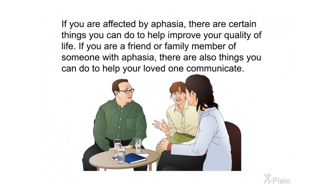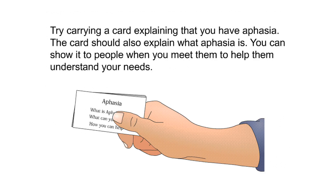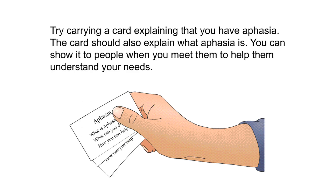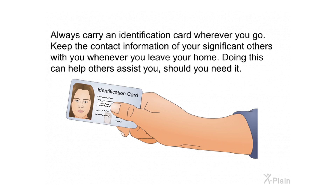If you are a friend or family member of someone with aphasia, there are also things you can do to help your loved one communicate. Try carrying a card explaining that you have aphasia and what aphasia is — you can show it to people when you meet them to help them understand your needs. Always carry an identification card with the contact information of your significant others whenever you leave your home, so others can assist you should you need it.